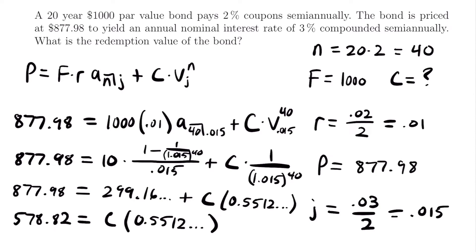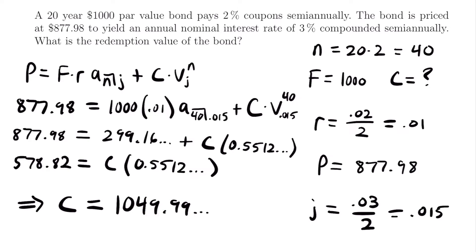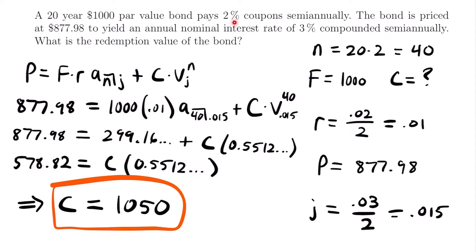Our final step is to divide both sides by 0.5512 to isolate C. Dividing gives C equals approximately $1,049.99. Since we have 49.99, it's safe to round up to $1,050. So the redemption value of this bond is $1,050.